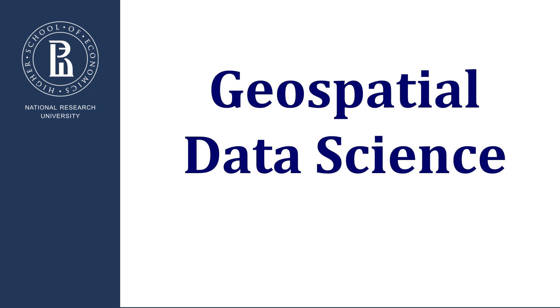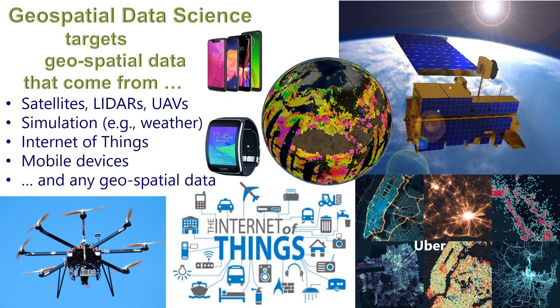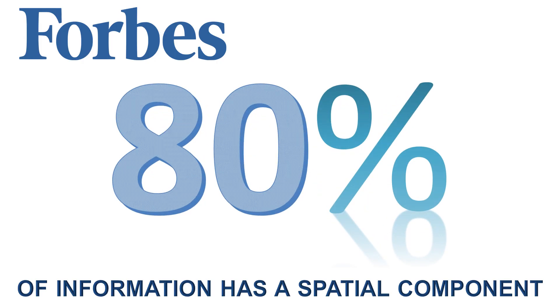Geospatial data science targets geospatial data that come from satellites, LiDARs, unmanned aerial vehicles, simulations, the Internet of Things, mobile devices, and generally any geospatial data. According to Forbes, about 80 percent of all worldwide information has a spatial component.